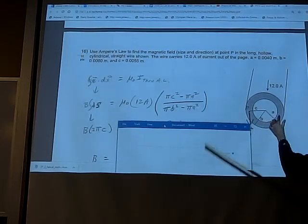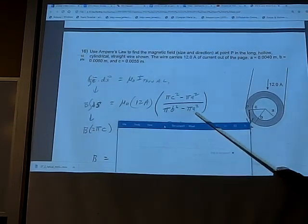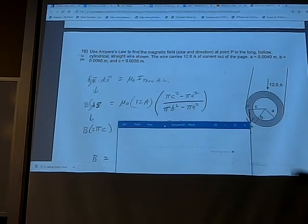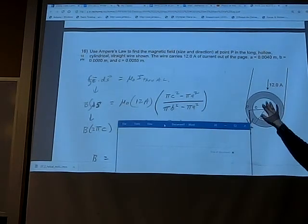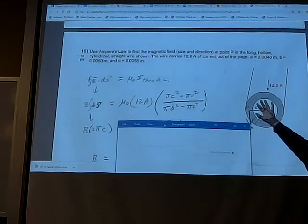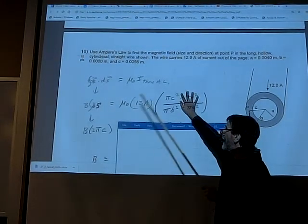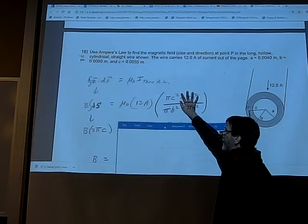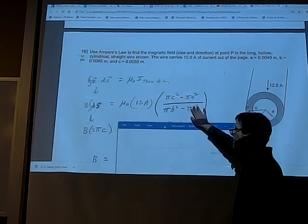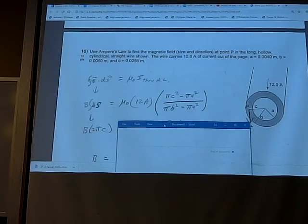The denominator is the area of this shaded region, so it's πb² minus the area of the hole. If this were a solid cylinder, and there's an example of that in the PowerPoint without a hole, just these two terms would be gone and you'd still have the ratio of the areas πc² over πb², but you wouldn't subtract out the area of the hole.